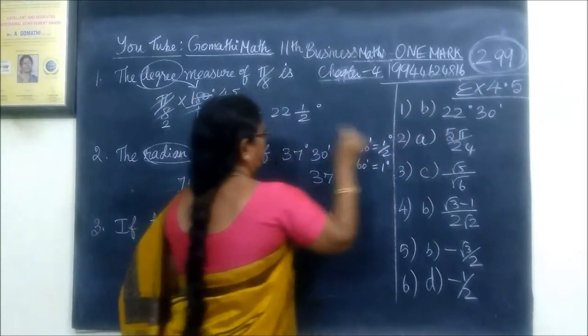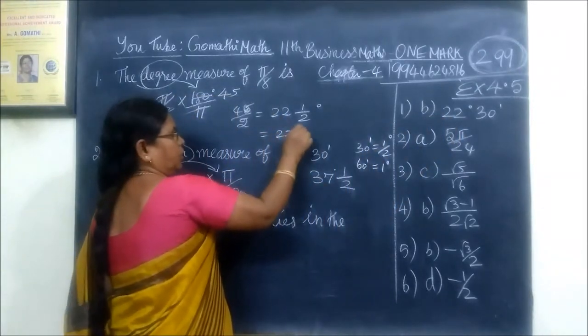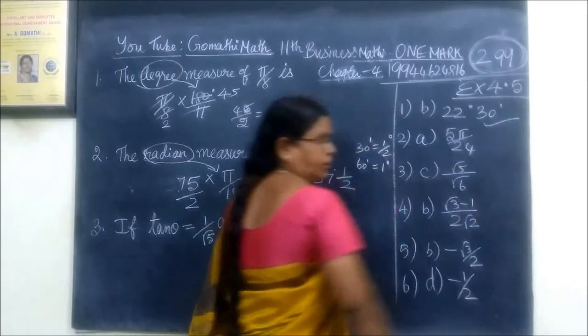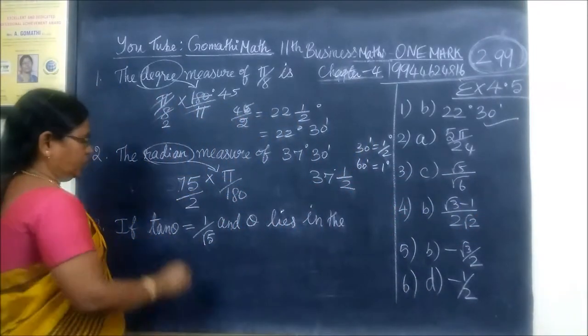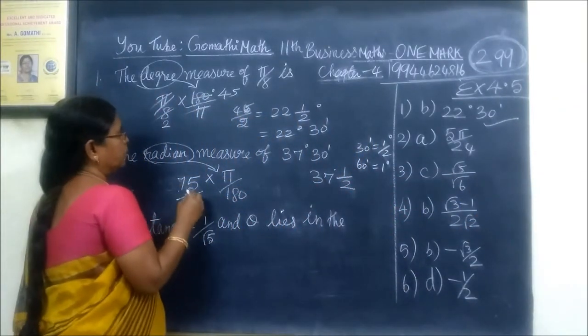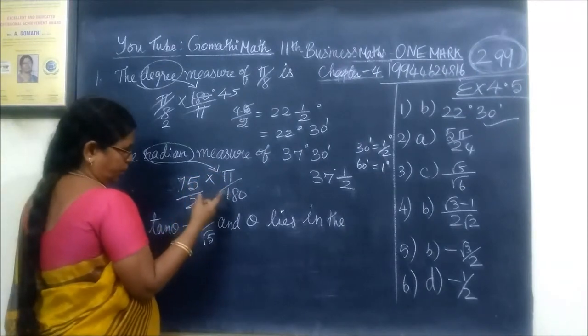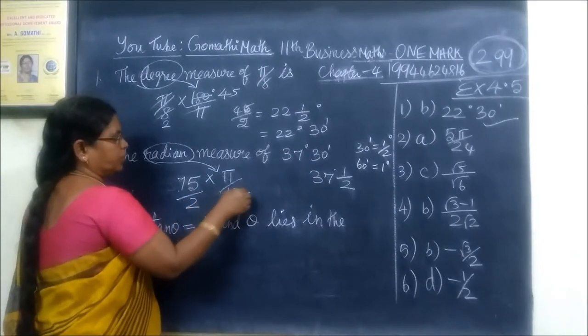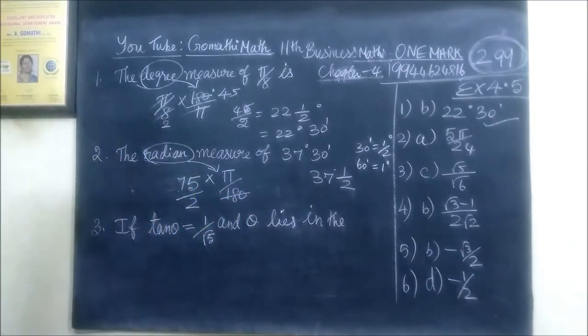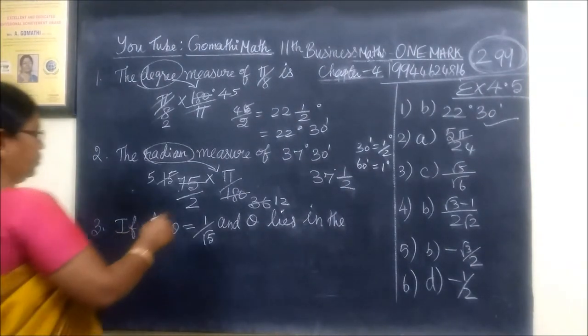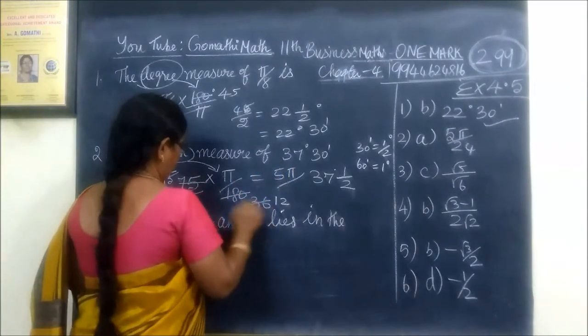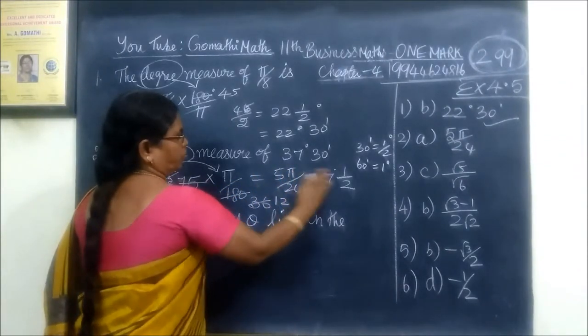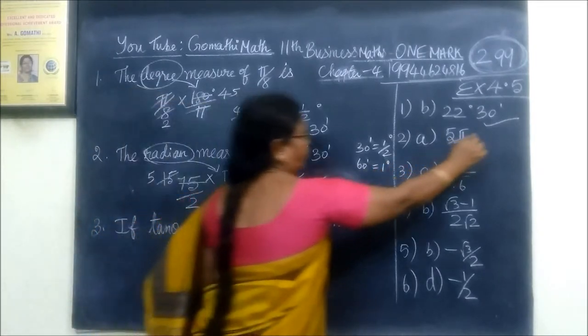22 and half degree. After 30 minutes, we start using this option. This is the number of 4 times, this is the number of 5 times, 9 times. This is 5 by 24. Here is the option here.